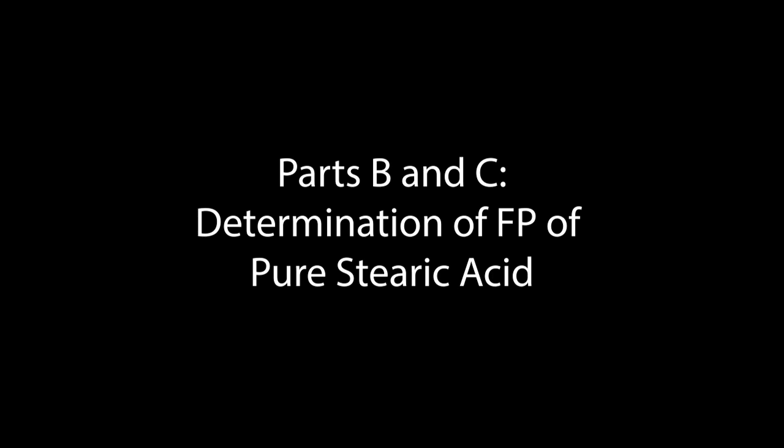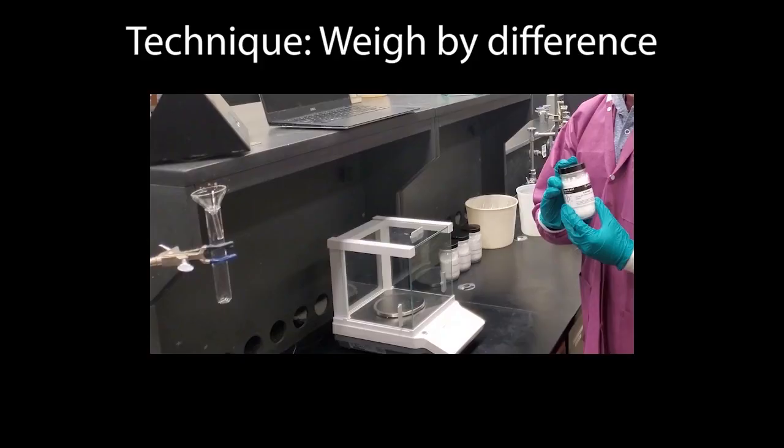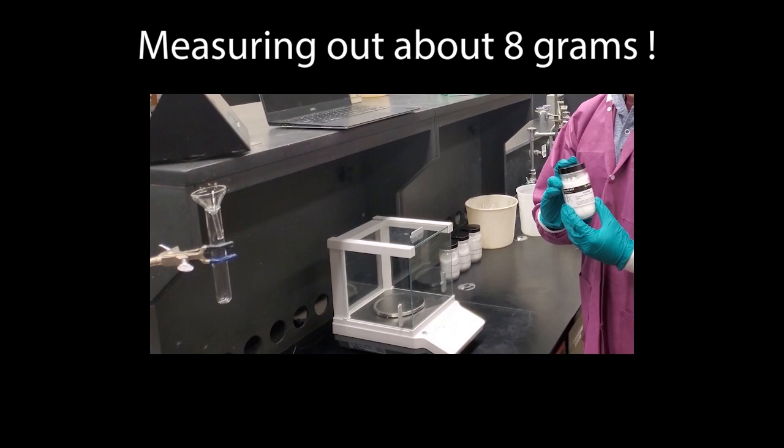We then need to weigh out our stearic acid for parts B and C. Weighing by difference as we've explained involves repeated weighings of a weighing bottle containing a quantity of solid reagent. As the solid is removed to another vessel like a weigh paper or the actual glassware the mass of the weighing bottle contents decreases. We would weigh out eight grams of stearic acid and add it to our test tube.